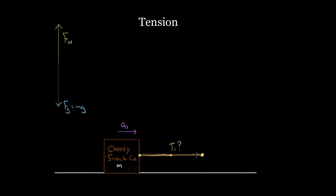Here's the first big misconception. People look at the rope and think it's pushing on the box — but that doesn't make any sense. You can't push with a rope. Go try it: tie a rope to something and try to push on it — the rope just goes slack. Ropes cause tension, which is a pulling force. Tension is a pulling force because the rope gets taut and tight. So I have to draw this tension T1 pointing to the right — in the direction it's pulling.